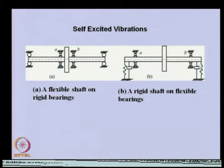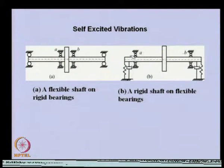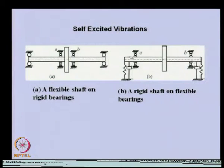If we try to arrest the motion of the shaft ends by providing rolling element bearings fixed to the stator, we will see that when we stop the motion of the shaft ends, the self-excited force that was generating earlier will also diminish and die down. So the self-excited vibration due to the fluid film bearing takes place only when the motion of the shaft ends is present. If we arrest the motion of the shaft, the self-excited vibration will automatically die down.